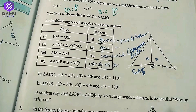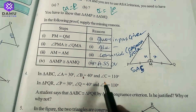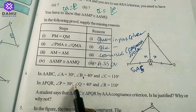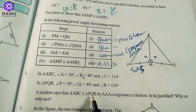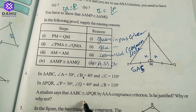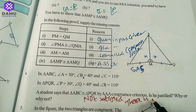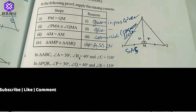The fourth question: in triangle ABC, angle A = 30°, angle B = 40°, angle C = 110°. In triangle PQR, angle P = 30°, angle Q = 40°, angle R = 110°. A student says triangle ABC is congruent to triangle PQR by AAA congruency criterion. He is not justified because there is no AAA congruency criterion.